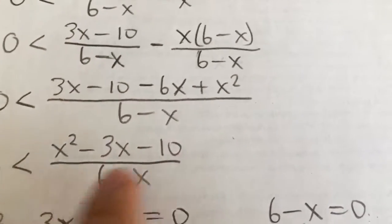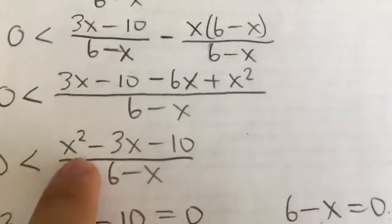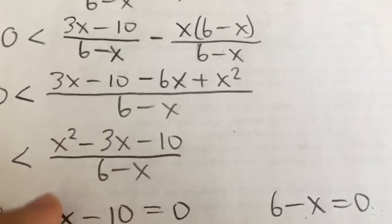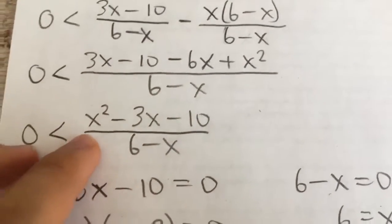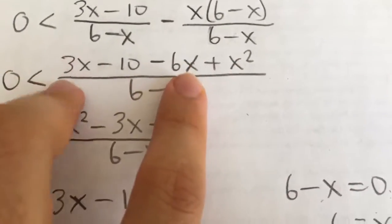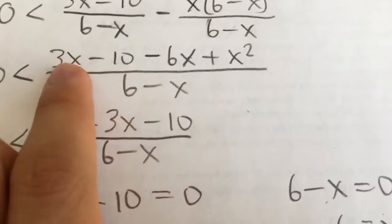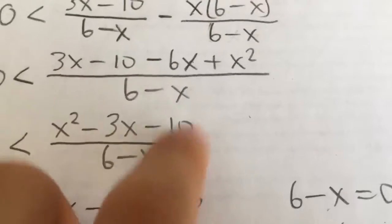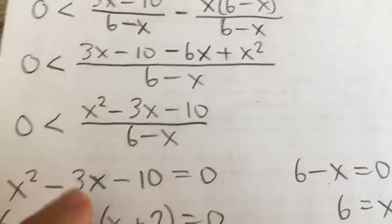So if I simplify, collect like terms, I'm going to put the x squared first because we typically want it in descending power order, x squared first. So x squared minus 6x, or sorry, minus 3x because we have a positive 3 here. And then minus 10. And that's over 6 minus x.